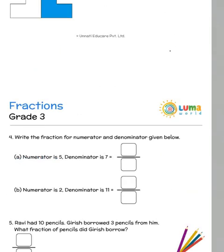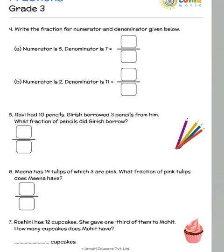And then we have write the fraction for the numerator and denominator given below. So the numerator is given as five and the denominator is given as seven, so it's five by seven. Here the numerator is two and the denominator is 11, so it's two by 11.